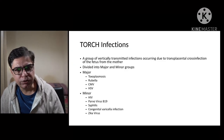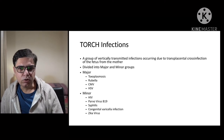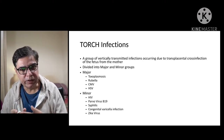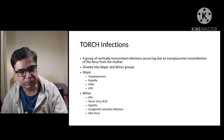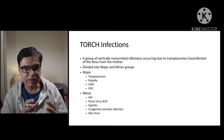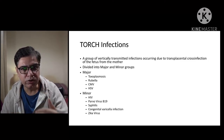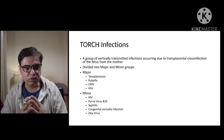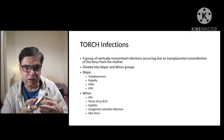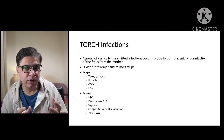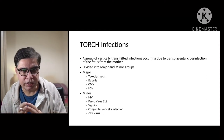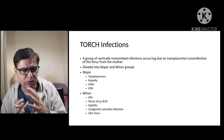Congenital infections of the neonates, or TORCH infections — what are these? TORCH infections are a group of infections transmitted vertically, meaning from the mother to the fetus, and occur because of transplacental cross infection. The mother gets the infection during pregnancy, these infections cross the placenta, go into the fetus, and can damage fetal organs. They can manifest during fetal life and be picked up on antenatal scans, or can be picked up later when the neonate is born.